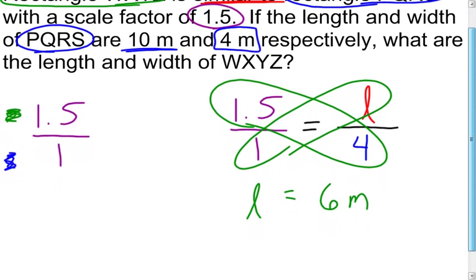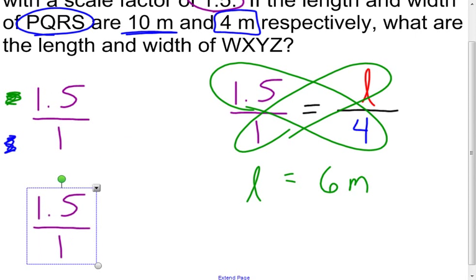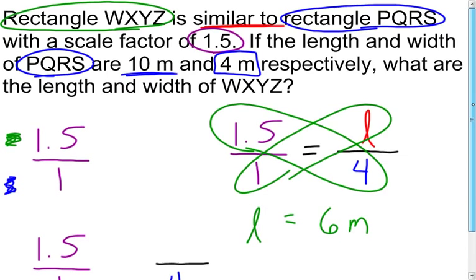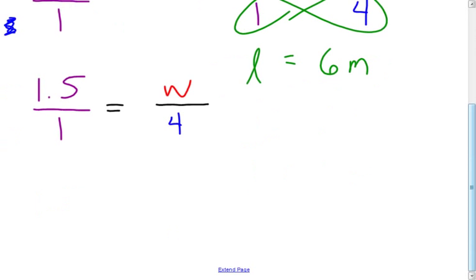Now I can do the same thing with dealing with the width. I can use this scale factor again. Clone it. And I can set up a proportion for this one. Now this time I know that my width is 4 meters for the blue one or rectangle PQRS. And I'm looking for the width of that rectangle. We know that these ratios have to be equal. Solve my proportion.